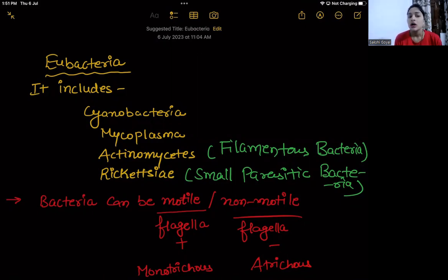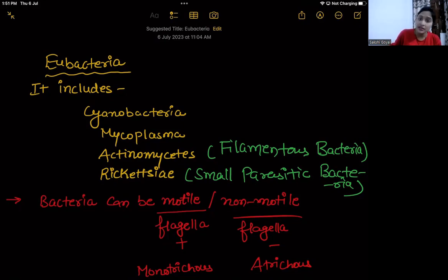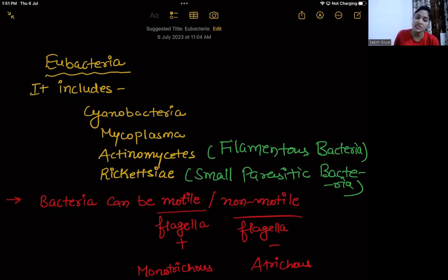Eubacteria includes the groups of Cyanobacteria and Mycoplasma — these two are well known. There are also groups like Actinomycetes, Rickettsia, Chlamydiae, and Spirochetes, though those last two you will not be asked about. The four main groups are Cyanobacteria, Mycoplasma, Actinomycetes, and Rickettsia, but there are other groups as well.